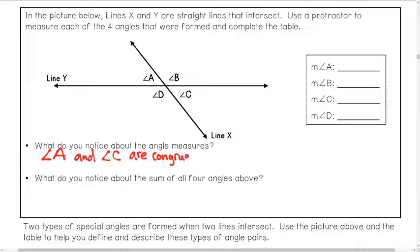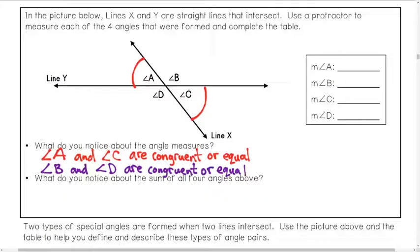Well, angle A and angle C are congruent or equal. And with a protractor, we would find that those are probably really close to like 60 degrees, which would then make these ones really close to 120 degrees. So we also know that angle B and D are congruent or equal, which then means that we can answer our next question: what do we notice about the sum of all four angles? If you were to add up all four angles here, what would be the total sum of that in degrees? Well, that looks like a full complete circle, so that would be a total of 360 degrees.